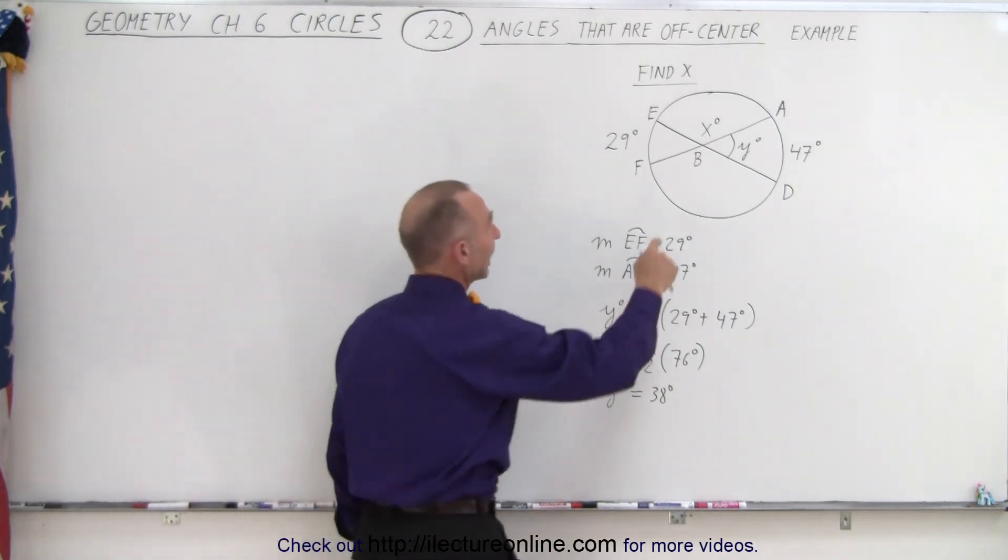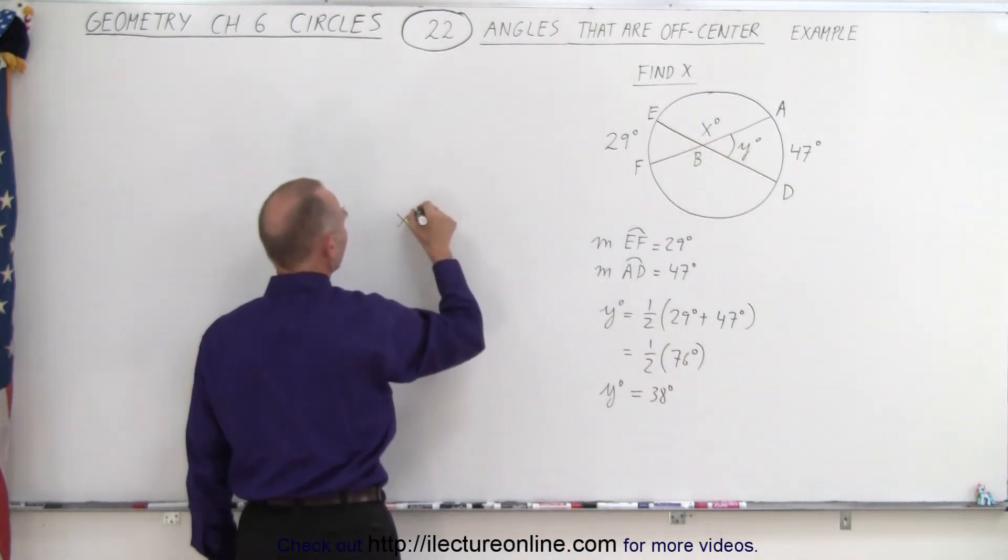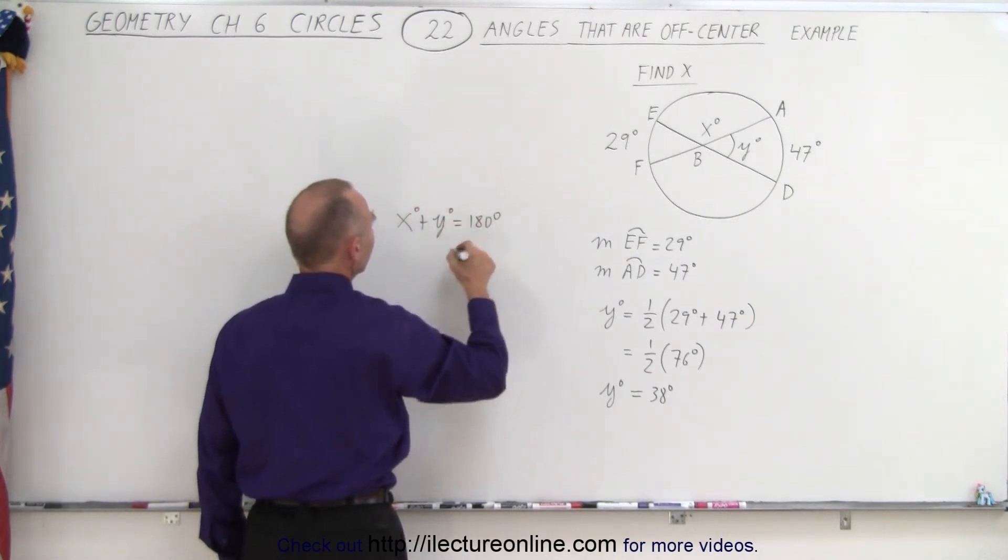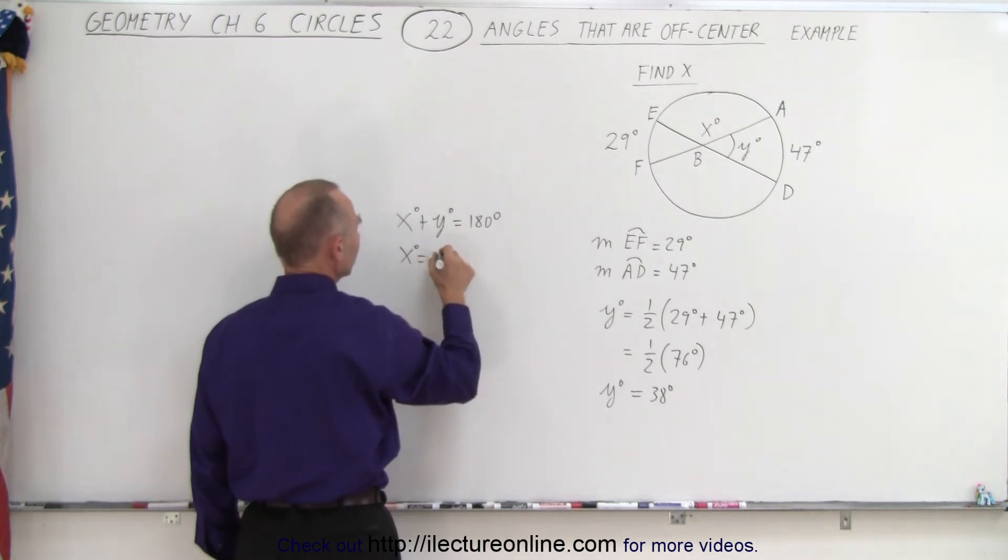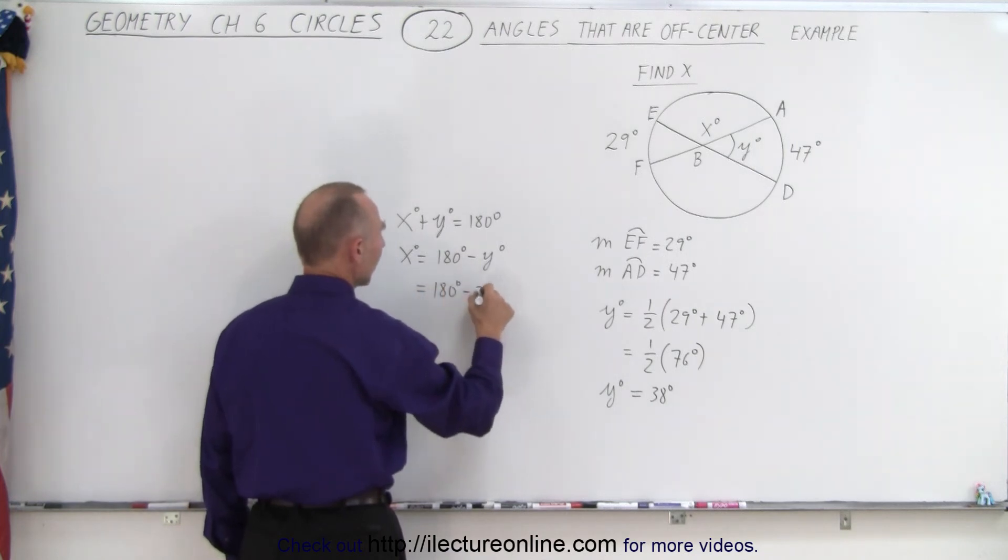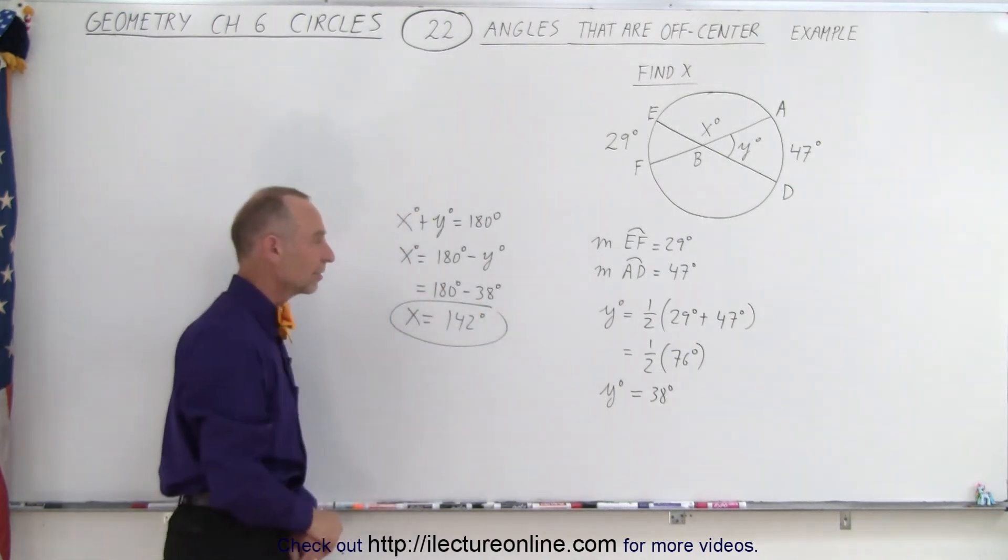Now I do know that x and y are what we call supplementary angles, so x plus y must equal 180 degrees. Therefore, x degrees is equal to 180 degrees minus y degrees. We know the value for y, so this is equal to 180 degrees minus 38 degrees, which is equal to 142 degrees. That is how we figure out what the value for x is.